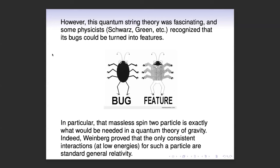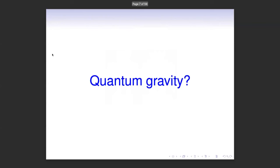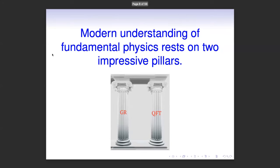Weinberg proved a theorem, also in the 60s, that if you have a massless spin-2 field, basically the only way you can consistently couple it is via gravity. It becomes the graviton — its couplings give you general relativity, at least at linearized order. So that spin-2 massless particle made people really excited. I'm going to take a little detour through why quantum gravity was such an interesting problem to people.